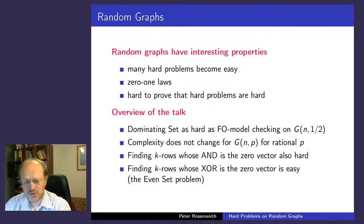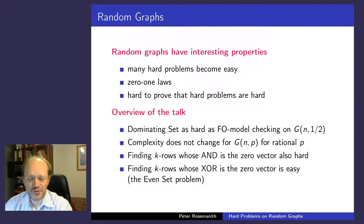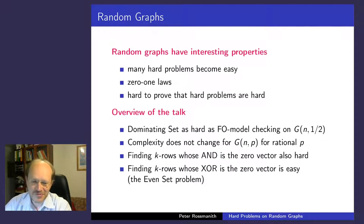This is a pity because we need it, for example, in cryptography. We would like to show that it's hard to factor a number that is the product of two random primes, but we cannot do that at the moment. So in my talk I will try to do a little bit in this direction.